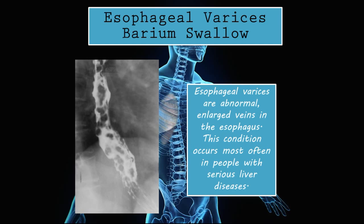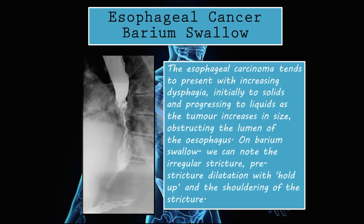Esophageal varices on barium swallow: esophageal varices are abnormal enlarged veins in the esophagus. This condition occurs most often in people with serious liver disease because of collateral circulation — the veins in the esophageal wall become enlarged. On the barium swallow, the little blotches where the barium doesn't stick properly to the wall represent those areas of enlarged veins. This is what esophageal varices typically look like on a barium swallow test.